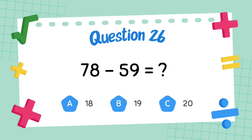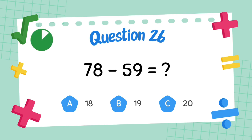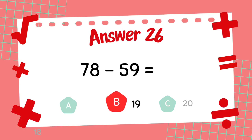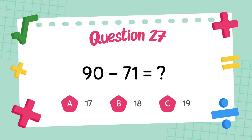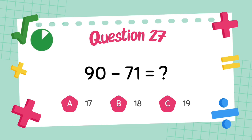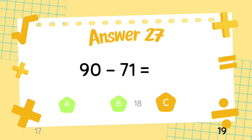What is 78 minus 59? The answer is 19. What is 87 minus 68? The answer is 19.